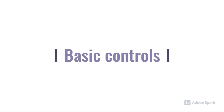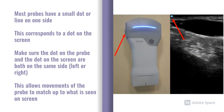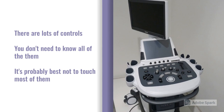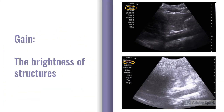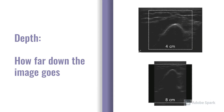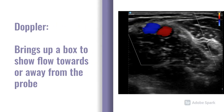Most probes have a small dot or line on one side of the plastic structure, which corresponds to a dot normally on the left side of the screen. This allows you to line up your movements, so lateral movements of the probe occur laterally on the screen. There are lots of buttons on the machine, but only a few you'll need: the gain, which is the brightness of the structures; the depth of the image, i.e. how far down the image goes; and the Doppler button, which brings up a box to show flow through structures — useful for distinguishing veins from arteries.